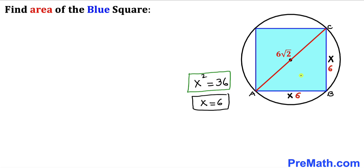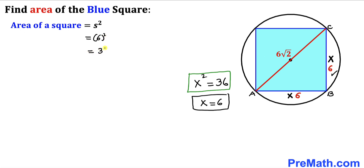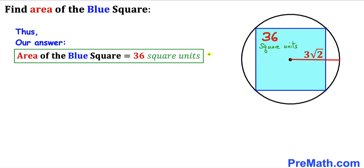Now let's calculate the area of this blue shaded square. The area of a square formula is: Area = s², where s is the side length. In our case the side length is 6 units, so Area = 6² = 36 square units. Therefore, the area of this blue shaded square is 36 square units.